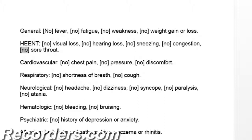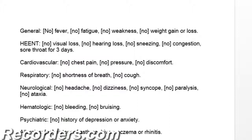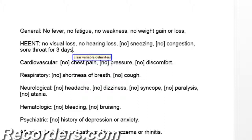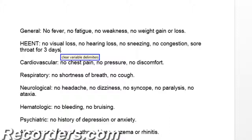Now I can remove the word no. Delete that. Insert after sore throat: for three days. Now that I've changed the content in that field, you can see that the square brackets have disappeared. Once you're finished navigating fields, you can get rid of the remaining square brackets by using the command clear variable delimiters. Clear variable delimiters — and now my Review of Systems is complete.